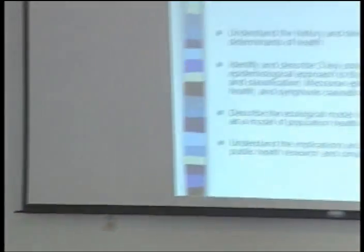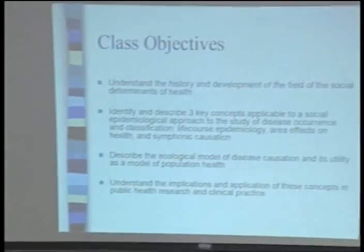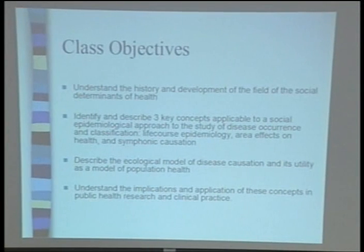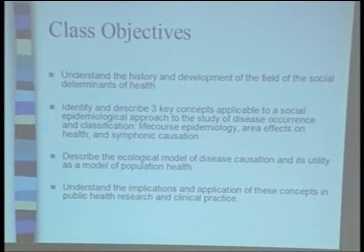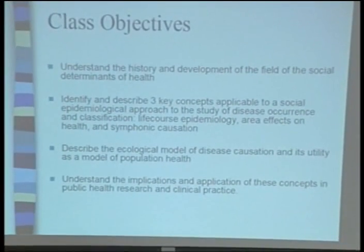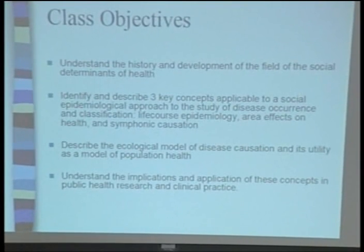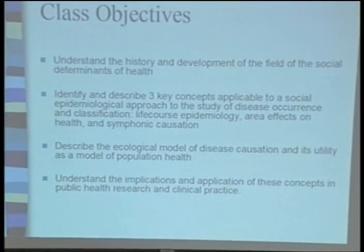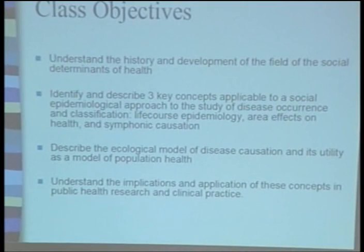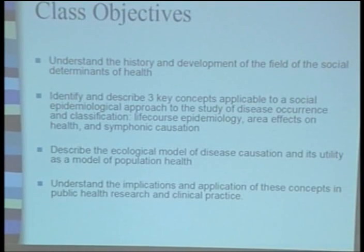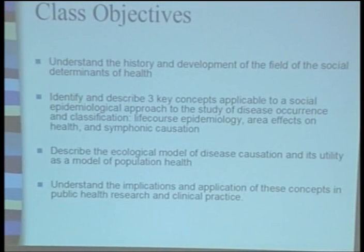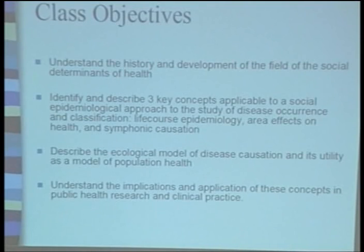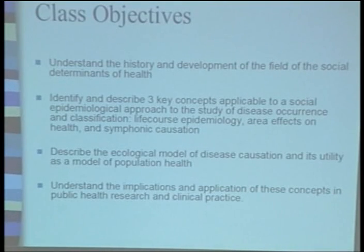Today we will meet four objectives. By the end of this session, you will understand the history and development of the field of the social determinants of health. You should be able to identify and describe three key concepts relevant to a social epidemiological approach to the study of disease occurrence and classification. Those areas are life course epidemiology, area effects on health, and symphonic causation.